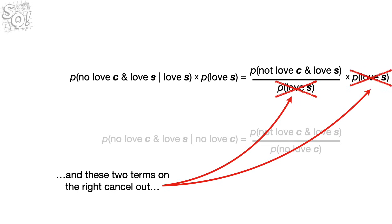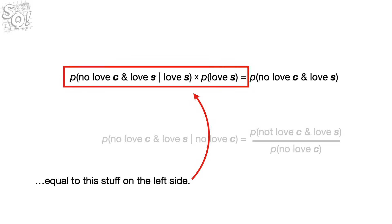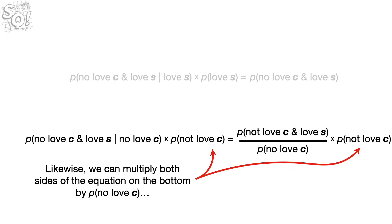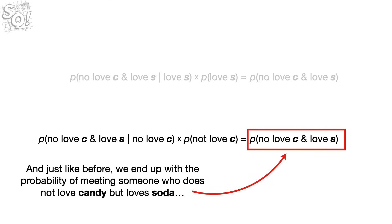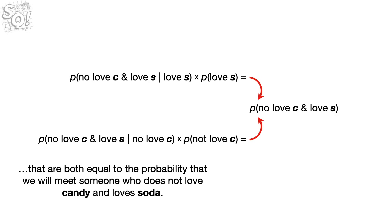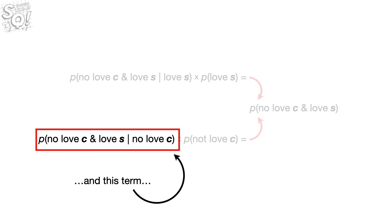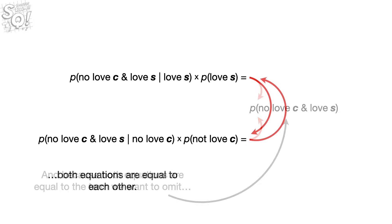These two terms on the right cancel out, and we are left with the probability that we meet someone that does not love candy but loves soda, equal to this stuff on the left side. Likewise, we can multiply both sides of the equation on the bottom, and these two terms on the right side cancel out. Just like before, we end up with the probability of meeting someone who does not love candy but loves soda, equal to this stuff on the left side. Now we have two things on the left side of the equal signs that are both equal to the probability that we will meet someone who does not love candy and loves soda. And because both equations are equal to the term we want to omit, both equations are equal to each other.